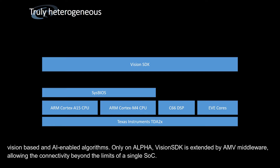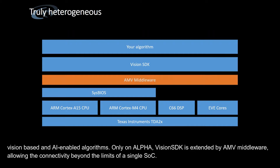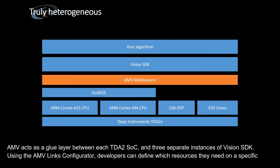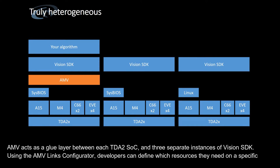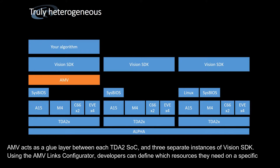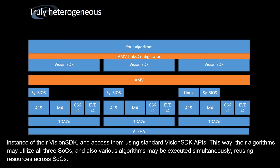Only on Alpha, Vision SDK is extended by AMV-Millware, allowing connectivity beyond the limits of a single SoC. AMV acts as a glue layer between each TDA-2 SoC and three separate instances of Vision SDK. Using the AMV links configurator, developers can define which resources they need on a specific instance of their Vision SDK and access them using standard Vision SDK. This way, their algorithms may utilize all three SoCs, and various algorithms may be executed simultaneously, reusing resources across SoCs.